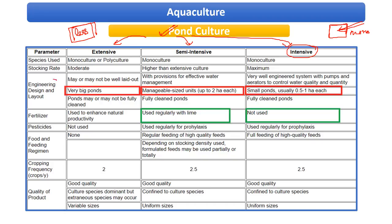In extensive culture, very big ponds are used. In semi-intensive, manageable sized ponds up to nearly two hectares are used. For intensive pond culture, small ponds of 0.5 to 1 hectare each are typically used. Coming to stocking rate or density — in intensive, it is going to be maximum, with more number of fishes per unit water area compared to semi-intensive and extensive. In extensive it is fewer or moderate, and semi-intensive is higher than extensive but less than intensive.